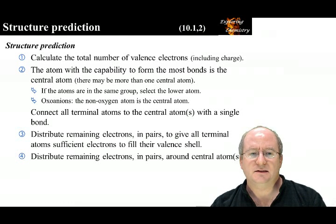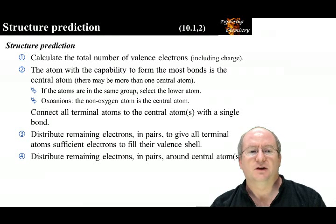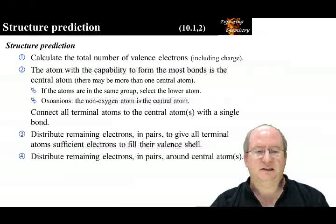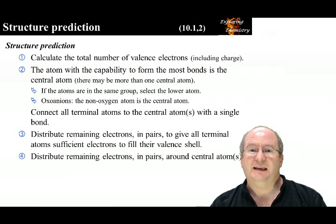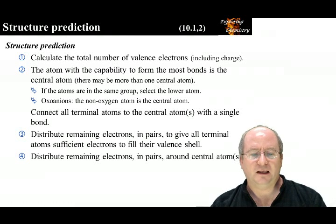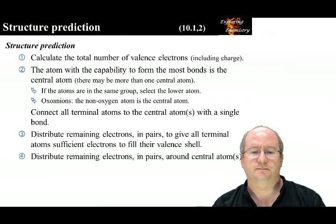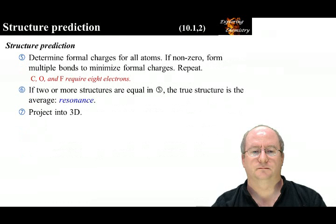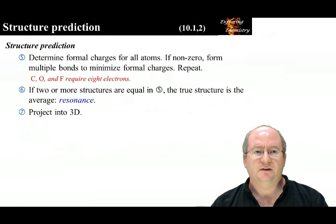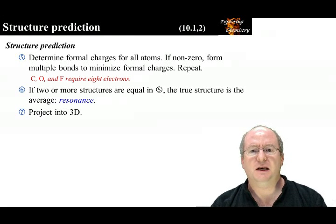When working with oxoanions, the non-oxygen atom is the central atom. Once we've identified the central atoms, we want to connect all the terminal atoms to the central atoms with a single bond. The third step is to distribute the remaining electrons in pairs to give all terminal atoms sufficient electrons to fill their valence shell. Finally, we wish to distribute the remaining electrons in pairs around the central atom. Step 5 is to determine the formal charges for all the atoms. If they are non-zero, form multiple bonds to minimize the formal charges, and this is repeated until the formal charges are minimized.